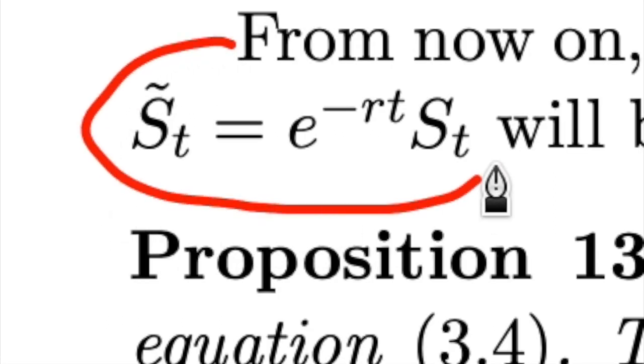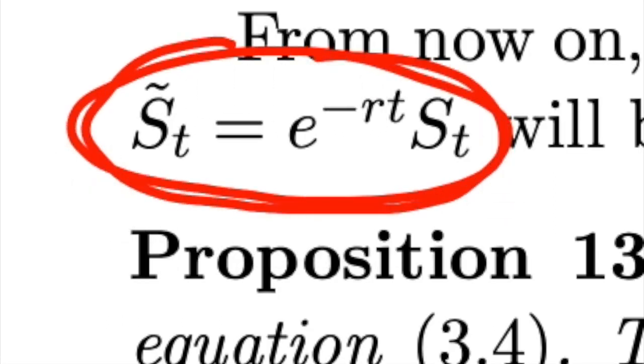To conclude, and to introduce the tilde notation, from now on, every time we define a stochastic quantity with a tilde on top, we indicate the discounted version of that. So S_t tilde is equal to e to the minus rt times the price process S_t. This discounting is always made with respect to the time at which the price is considered.